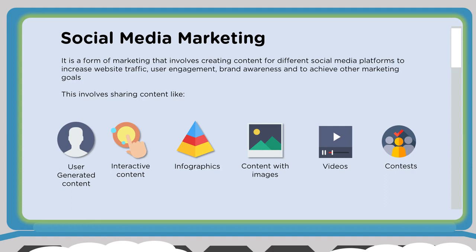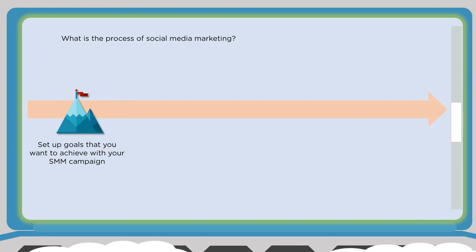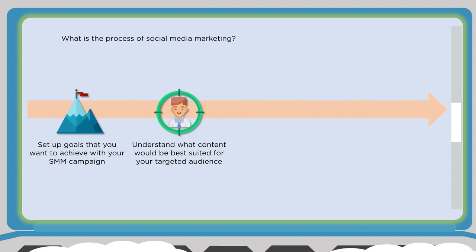Social media is great for distributing content to your target audience. It allows you to generate user-generated content, create interactive content using infographics, imagery, videos, polling, and contests — lots of flexibility. You want to establish a process for social media marketing: set up goals you want to achieve with your social media campaign, because just posting content for content's sake won't generate anything. Set up those goals ahead of time, then understand what content would be best suited for your target audience.